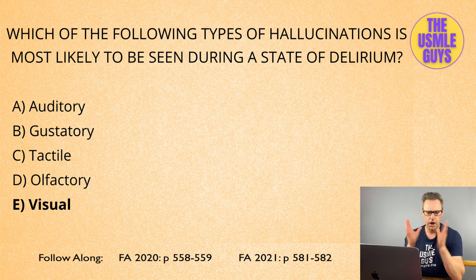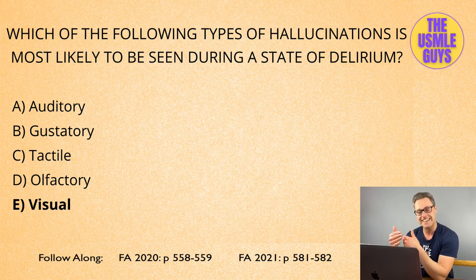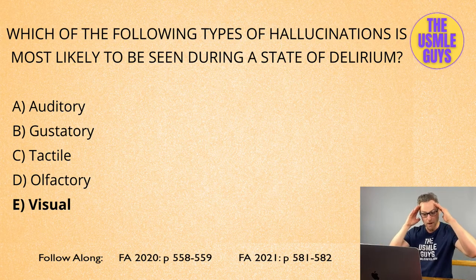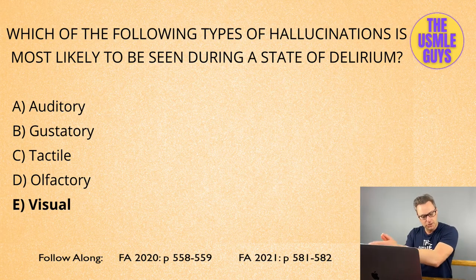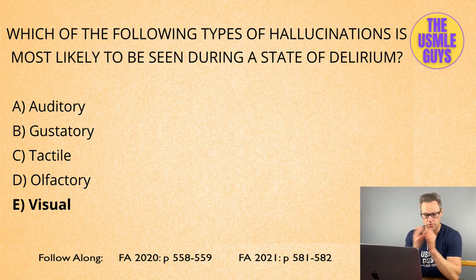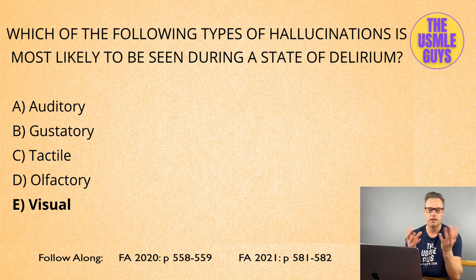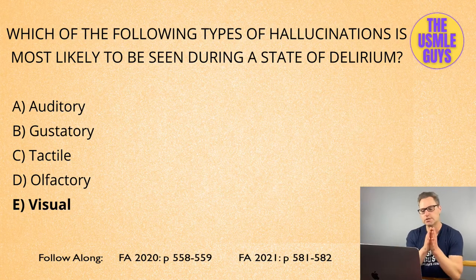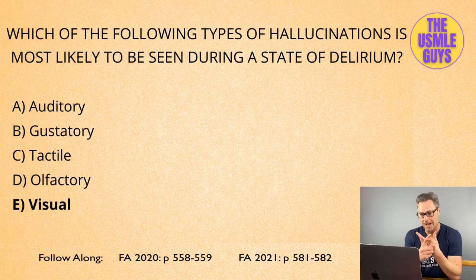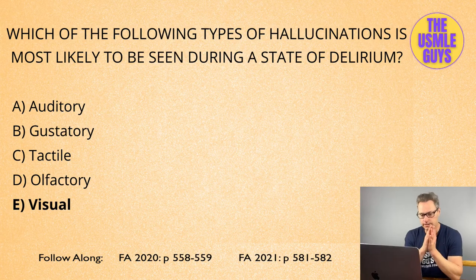Auditory hallucinations are seen more in psychiatric illnesses than in medical illnesses — so if you see auditory hallucinations, think psychiatric illness, whereas visual hallucinations are more likely seen in medical illnesses. Tactile hallucinations — that's touch — are often described as bugs crawling on your skin. Two common reasons: someone withdrawing from alcohol, or someone on stimulants like speed, crack, or cocaine.